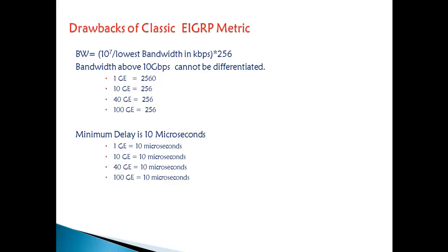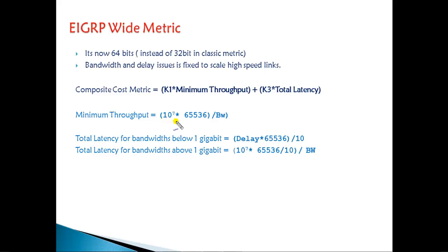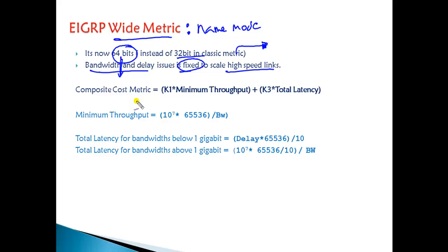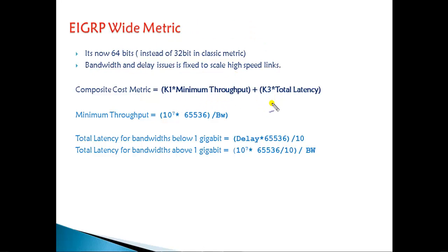This drawback has been overcome in the new EIGRP named mode configurations, which is what we call the wider metric. EIGRP wide metric, supported in named mode, uses a 64-bit metric rather than the 32-bit metric of classic EIGRP. This fixes the scaling issues seen earlier and properly supports high-speed links. The composite metric calculation is: K1 × minimum throughput + K3 × total latency (delay), where K1 represents minimum bandwidth and K3 represents the delay value.